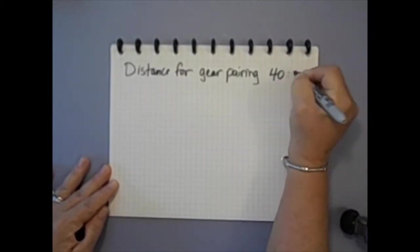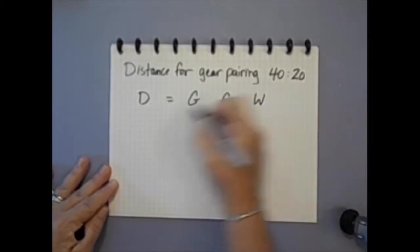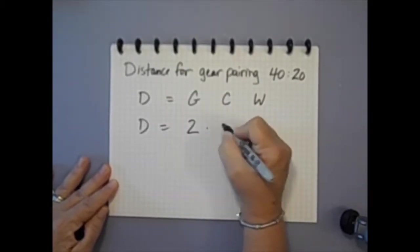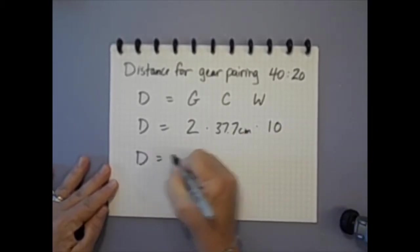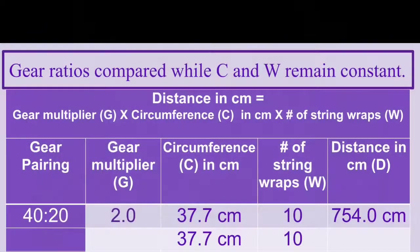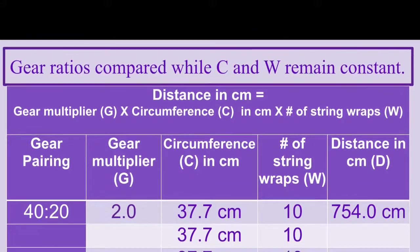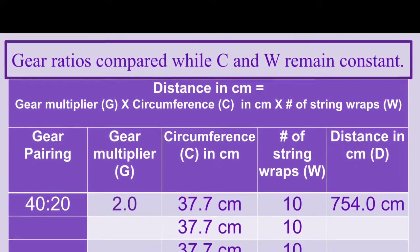As previously discussed, the gear pairing of 40 to 20 produces a gear ratio of 1 to 2 and a gear multiplier of 2. Distance D equals gear multiplier G times circumference of the wheels in centimeters C times the number of string wraps W, so D equals 2 times 37.7 centimeters times 10 equals 754 centimeters.